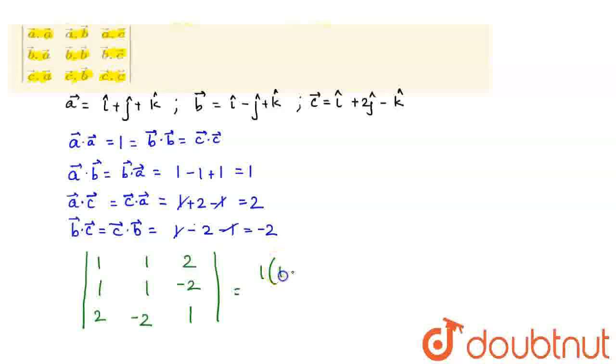We get 1 times 1 minus 4, minus 1 times 1 plus 4 plus 2 minus 2 minus 2. So we get minus 3 minus 1 into 5 plus 2 into minus 4.